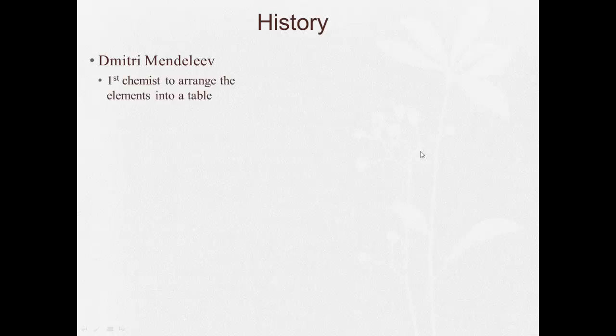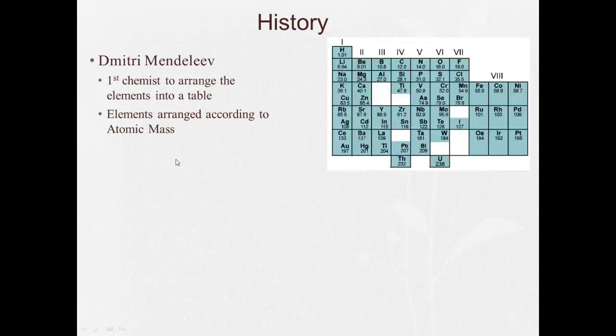He was a Russian chemist, and he was the first to arrange them into a table. He arranged them according to atomic mass. So it's very similar to what we have today, but there were some issues with it. There were some gaps, as well as some of the things were out of order when you look at the reactivity.